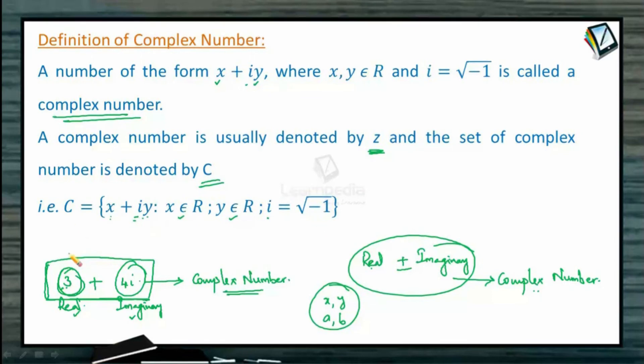So such a kind of set which is a combination of real numbers with that of imaginary numbers, that is x plus iy where both the components x and y are real numbers, and the i which is imaginary is square root of minus 1, such a combination is called a set of complex numbers.